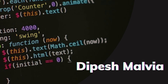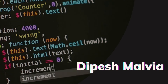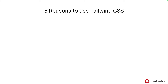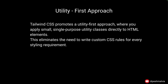So let's get started. The first reason to use Tailwind CSS in your project is the utility-first approach. Tailwind CSS promotes a utility-first approach where you apply small, single-purpose utility classes directly to HTML elements, and this eliminates the need to write custom CSS rules for every styling requirement.